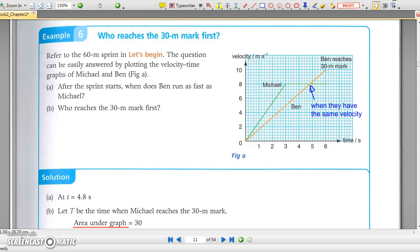In example 6, you have to find out who reaches the 30 meter mark first. So you have to calculate the area under the given velocity-time graphs. Now try checkpoint 2.